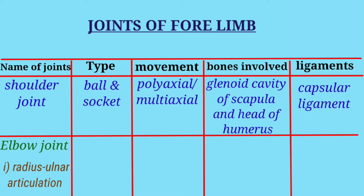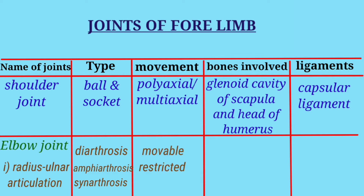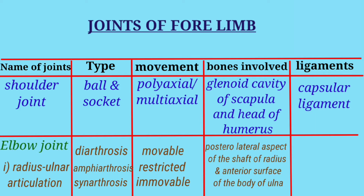In the radius-ulnar articulation, the type of joint is diarthrosis in the fetus, amphiarthrosis in the young, and synarthrosis in adults. Movement is movable in the fetus, restricted in the young, and immovable in adults. Bones involved are the posterior lateral aspect of the shaft of the radius and the anterior surface of the body of the ulna. Ligaments are the capsular ligament, interosseous ligament, and archiform ligament.